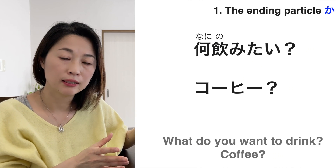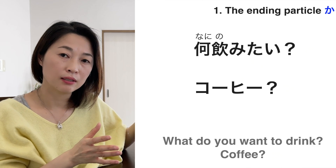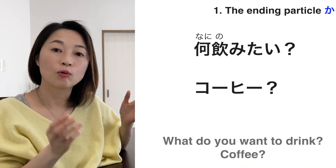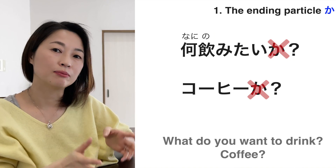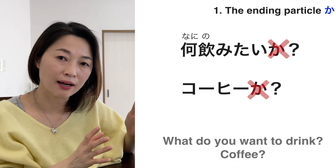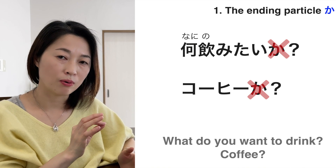Now let's start with ka. I think many of you have learned ka is a question marker, and that is correct. But in casual speech, I don't think many people use ka as a question marker with a rising tone. For example, if you want to ask someone what do you want to drink — coffee? — you'd say nani no mitai? kouhi? Rather than nani no mitai ka? kouhi ka? I don't think many people would say that.